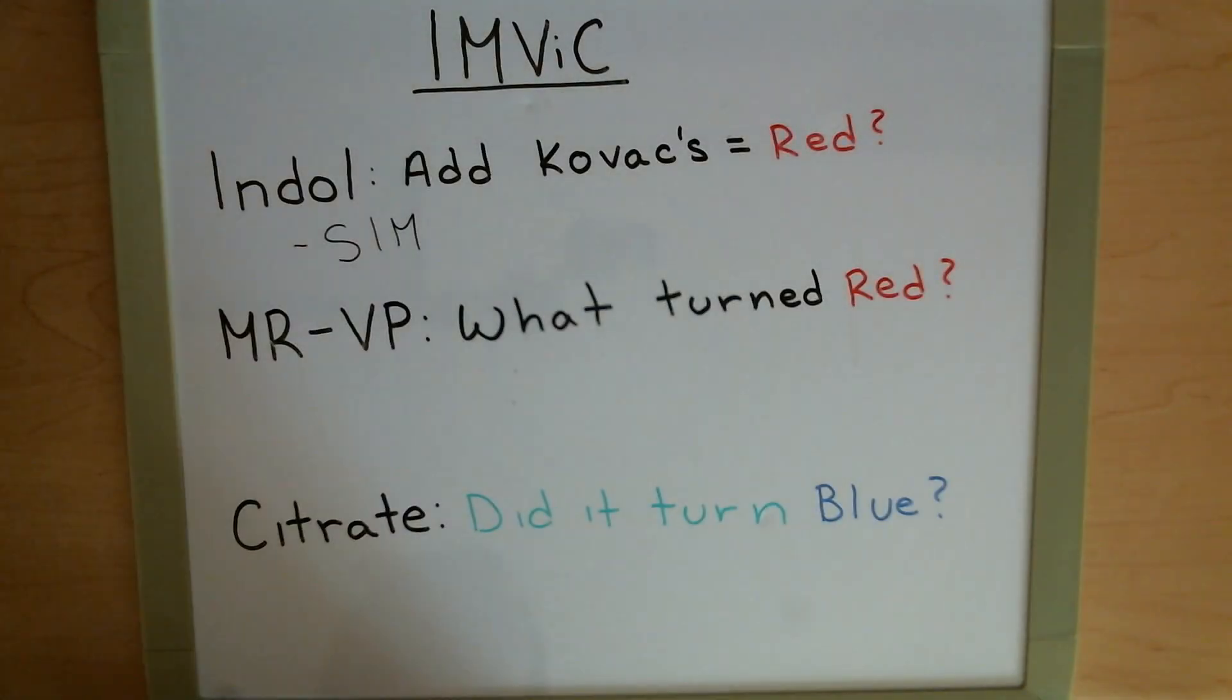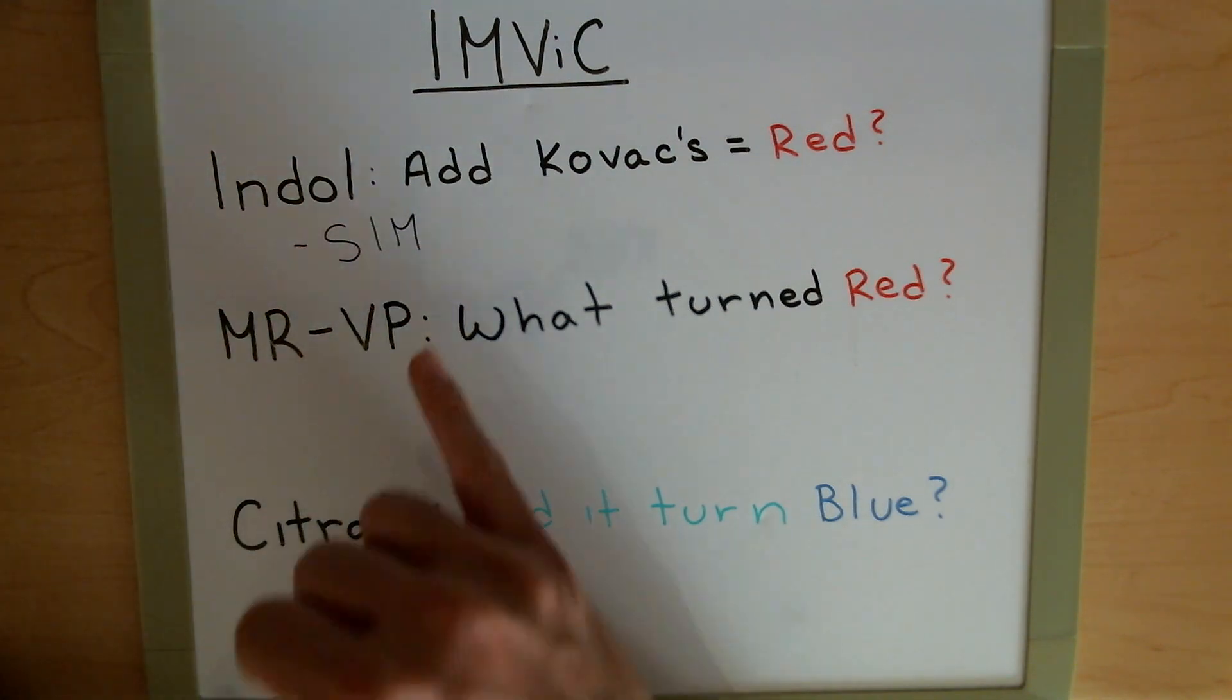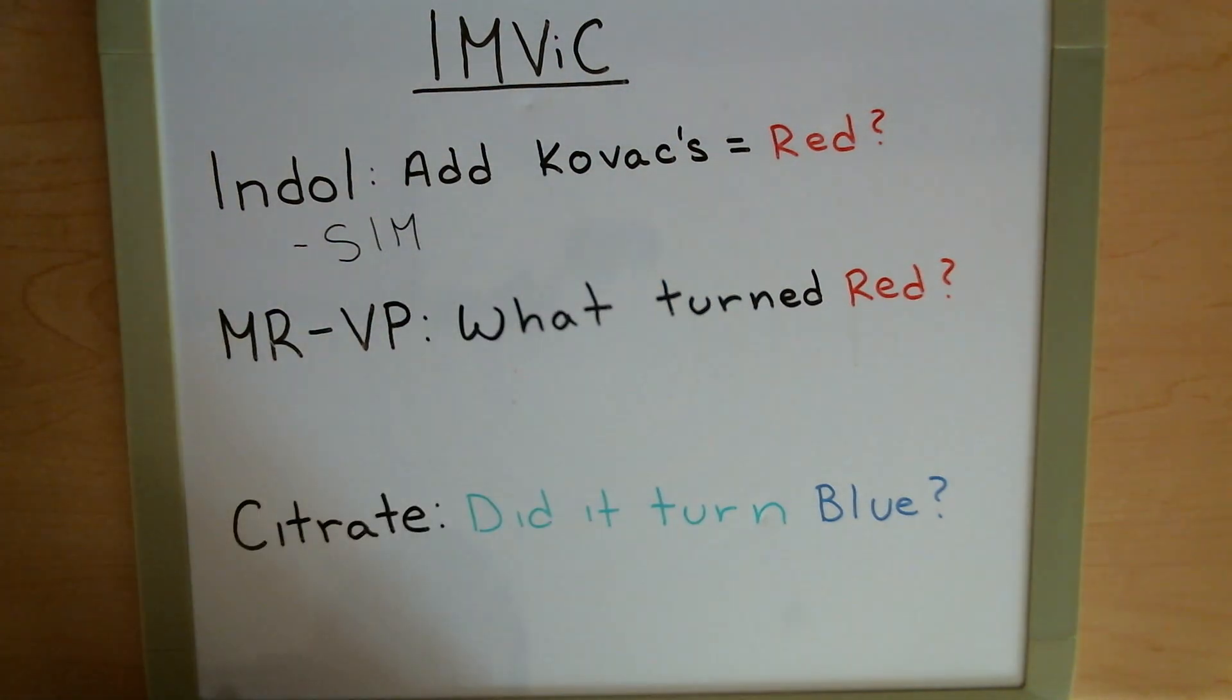So to sum that all up, we have our indole, which we have to use a SIM test for. When we add Kovacs reagent, we're looking for if that top layer becomes red. If it does, then it's indole positive. If it remains yellow, then it's indole negative.